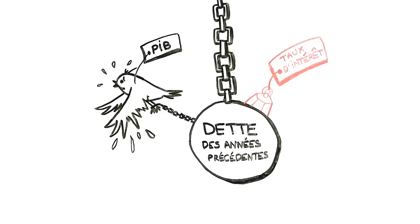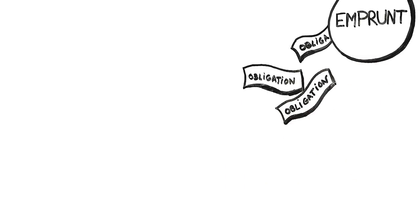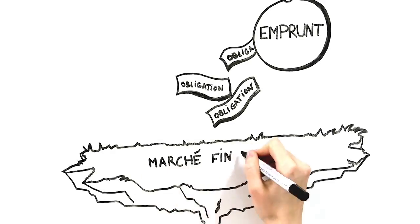Economists also look at the interest rates on a country's debt. A country borrows money by issuing sovereign bonds, parts of its debt, which are then bought and sold in the financial markets.